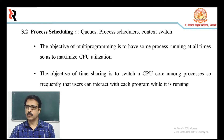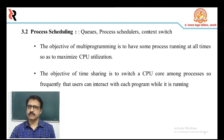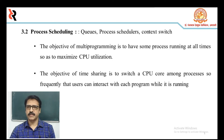Each CPU core can run one process at a time. For a system with a single CPU core, there will never be more than one process running at a time, whereas a multi-core system can run multiple processes at one time. If there are more processes than cores, excess processes will have to wait until a core is free and can be rescheduled. The number of processes currently in memory is known as the degree of multiprogramming.